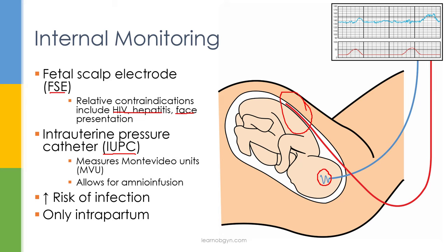Remember, an external monitor can only measure contraction frequency, but an internal monitor measures both frequency and strength — recorded in Montevideo units (MVUs). An IUPC also allows you to perform amnio infusion, putting fluid back into the uterus, which is useful when you see deep variable decelerations due to umbilical cord compression. Adding fluid creates more room around the cord and alleviates cord compression stress. Because internal monitors are foreign objects placed inside the uterus, they increase the risk of infection.